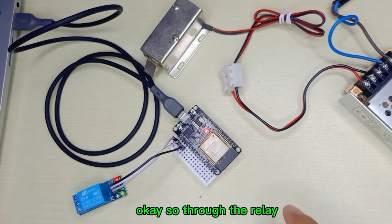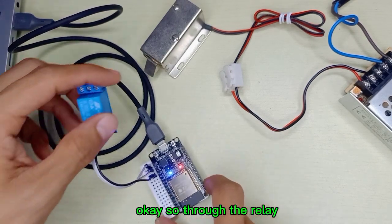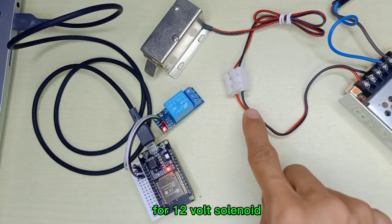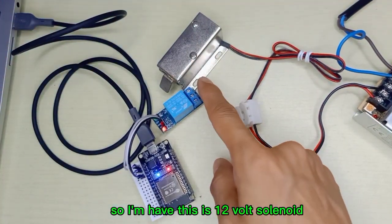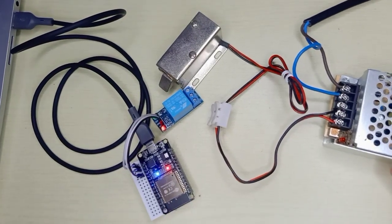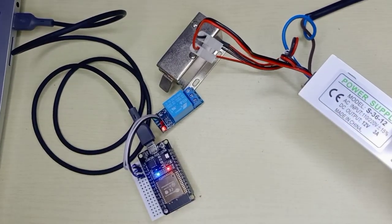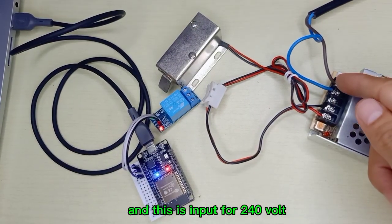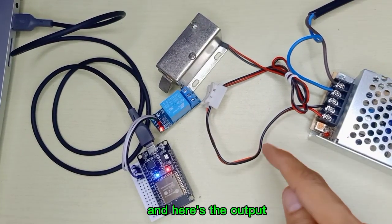Through the relay we are going to control this output for the 12 volt solenoid. I have a 12 volt solenoid and this is my 12 volt power supply - 12 volt 3 amp power supply. This is input for 240 volt and here's the output. Red is positive and black is negative.